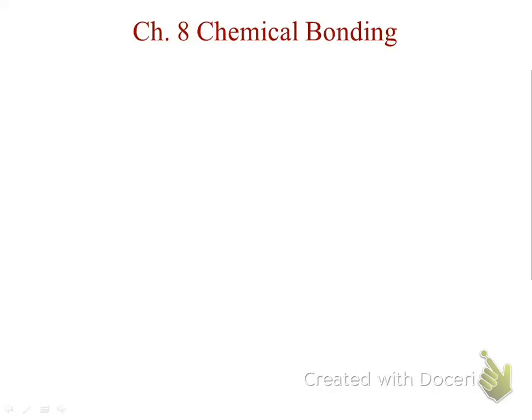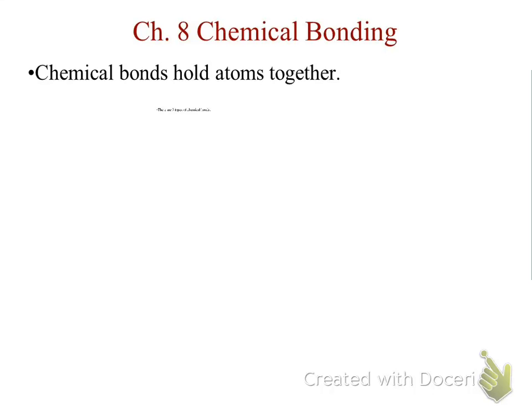Chemical bonding. There are three main types of bonding that we're going to look at. The first thing we need to understand is that chemical bonds are what holds atoms together by different means, and we're going to discuss those different means in just a few moments.